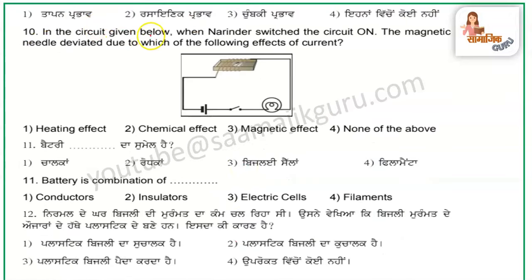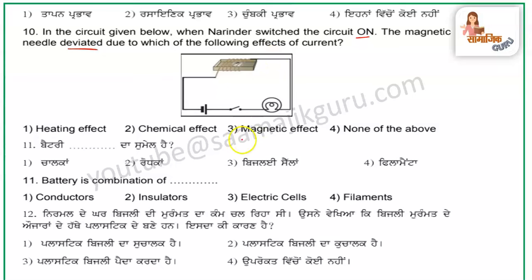The next question: in which circuit below, when Narendra switched the circuit on, the magnetic needle deviated? This shows us the magnetic effect of current — it is called the magnetic effect.